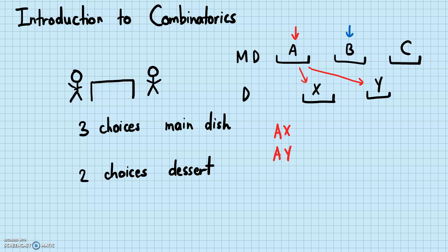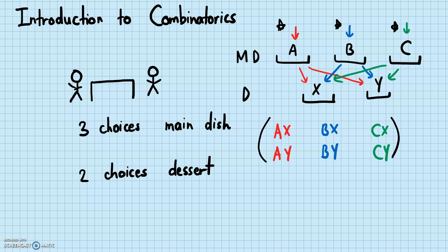Or you can choose B, and once you choose B you can choose X or Y — so BX or BY. Or you can choose C and then choose X or Y — so CX and CY. These are all the possible choices. You've covered all main dish choices A, B, and C, and for each main dish choice you've covered all dessert choices X and Y, giving a total of six possible combinations.